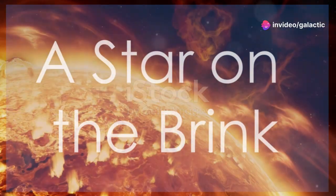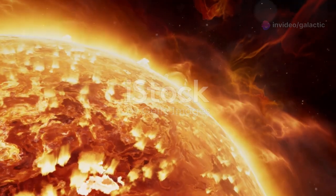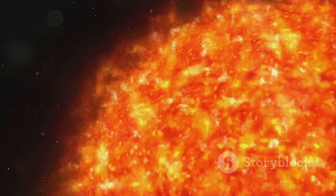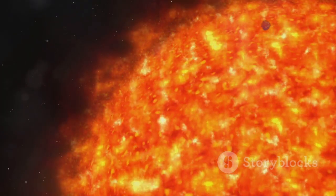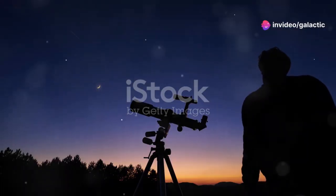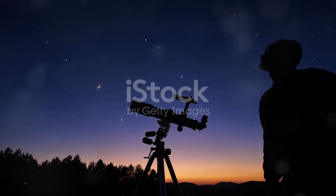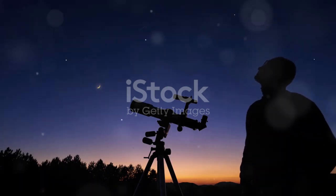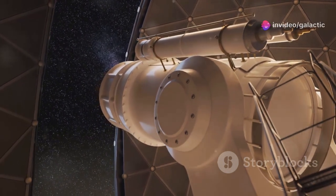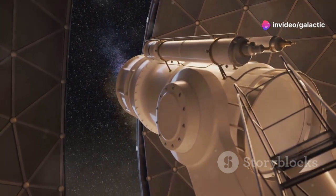The signs of Betelgeuse's impending demise are becoming increasingly difficult to ignore. This red supergiant, one of the largest and most luminous stars in our galaxy, is showing unmistakable signs of nearing the end of its life cycle. Astronomers, using powerful telescopes like the James Webb Space Telescope, have observed a series of dramatic events on the star's surface. These observations are crucial, as they provide us with a front-row seat to the final stages of a star's life.